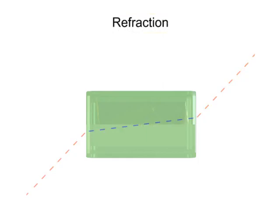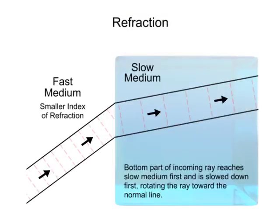To better visualize this phenomenon, let's look at this diagram. As a beam of light reaches the surface of a medium, the lower portion enters first and is slowed down. However, the upper portion is still traveling at the speed of light until it arrives at the surface and enters.